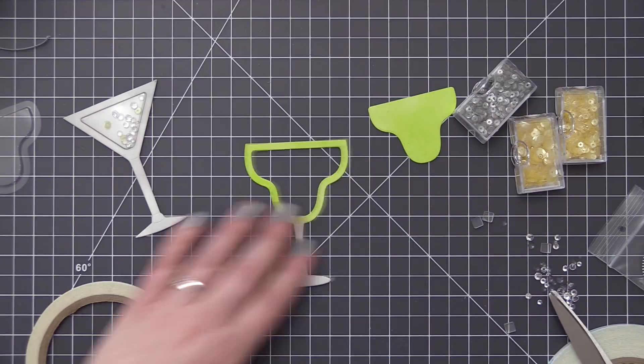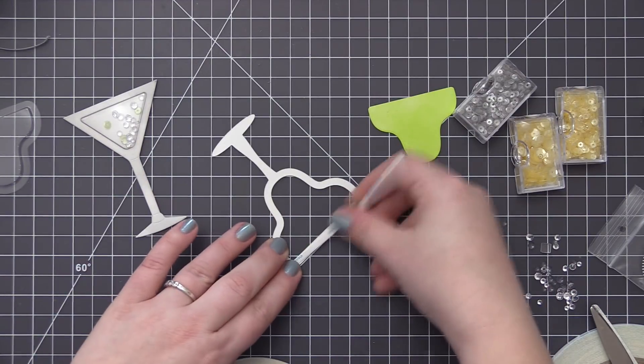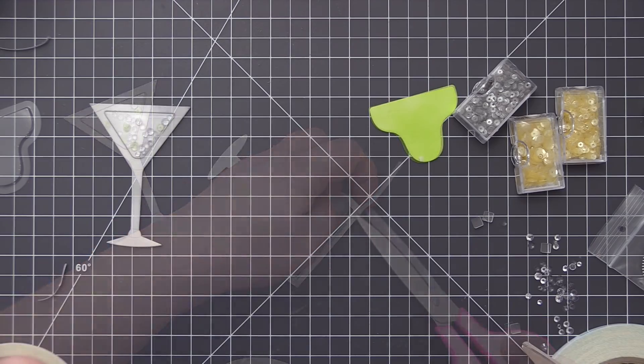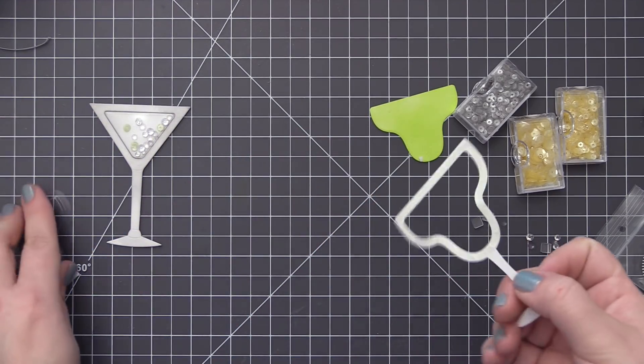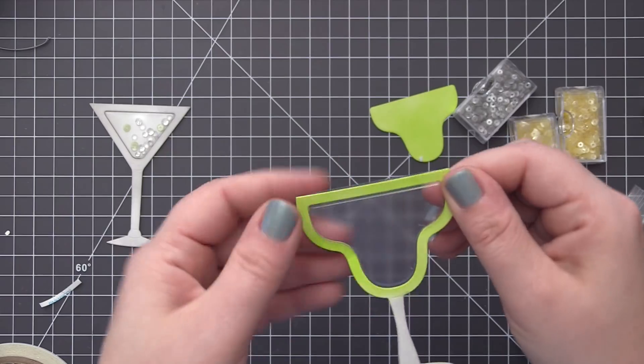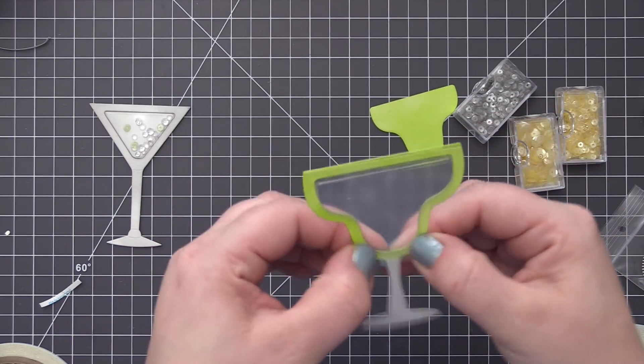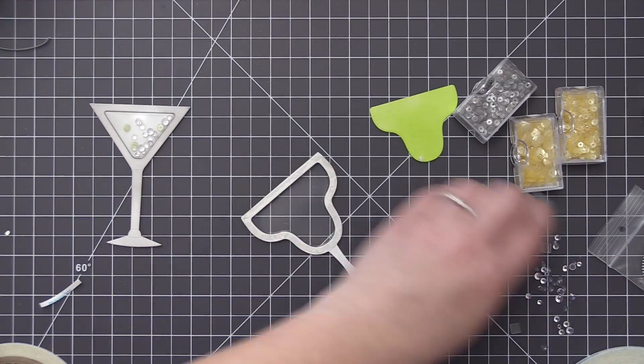So now you can see our finished shaker martini glass and we can move on and create our margarita glass. So for this one we're going to follow the exact same steps. I've added the score tape to the back of that frame and I'm just putting the shaker pouch directly into that window opening. And this one once again is sized to fit perfectly in there.